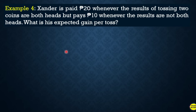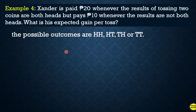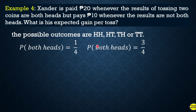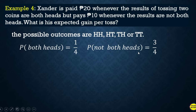When tossing two coins, we have four possible outcomes: head-head, head-tail, tail-head, or tail-tail. Only one of these four outcomes gives both heads, so the probability that Sander gets both heads is one-fourth. The probability of not getting both heads is three-fourths — meaning the chance of not getting two heads is higher.